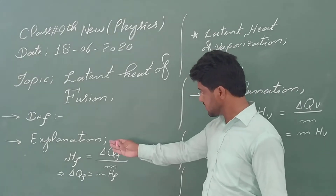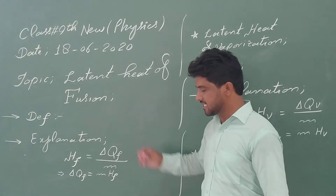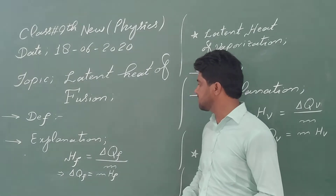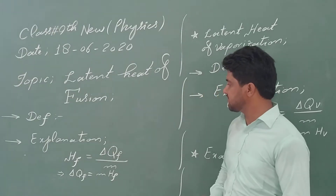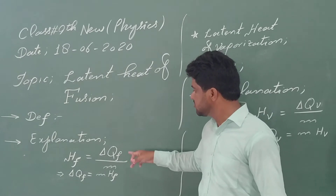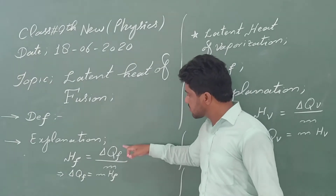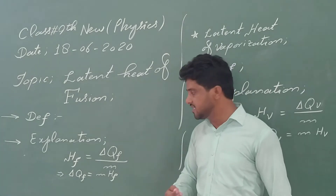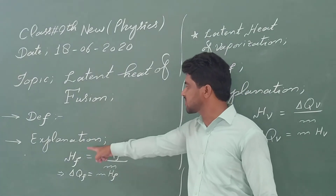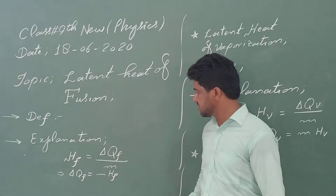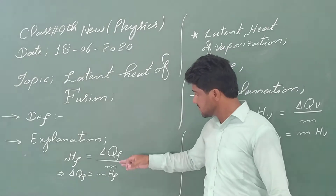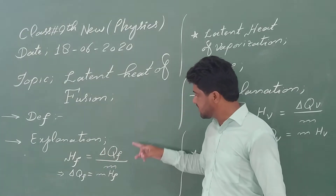Now we are talking about the mathematical formula. The latent heat of fusion represents the quantity of thermal heat energy required for a state change — without a temperature change. The formula is: HF is equal to delta QF divided by M. Rearranging, delta QF is equal to M multiplied by HF.